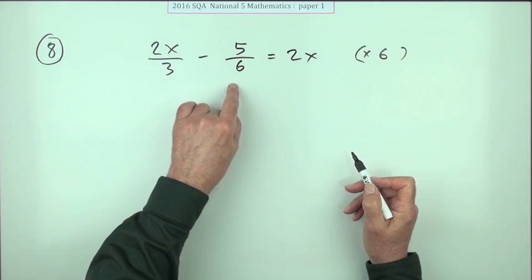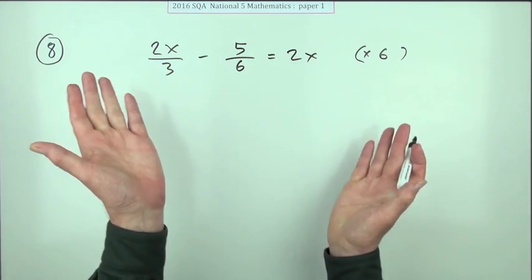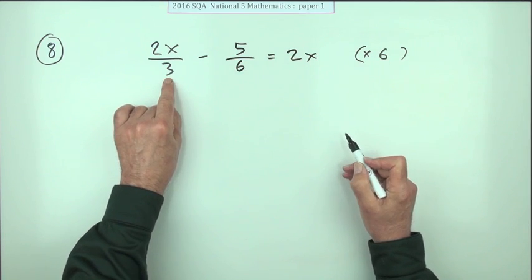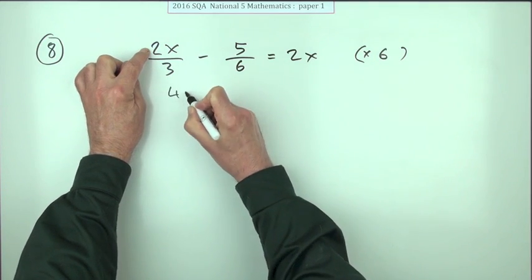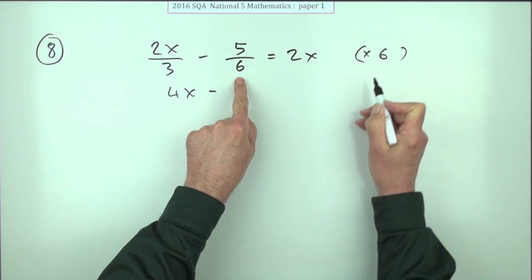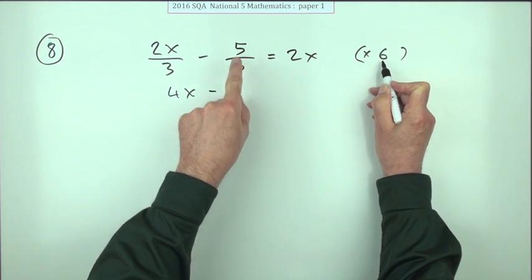All three parts have to get multiplied though to keep it balanced. So multiplying by six: three into six goes two times, two times x makes that into 4x. Six times this: six into six goes one, leaving that just as a five.